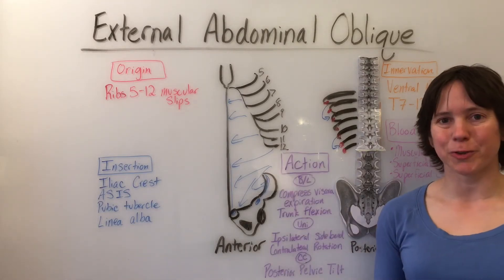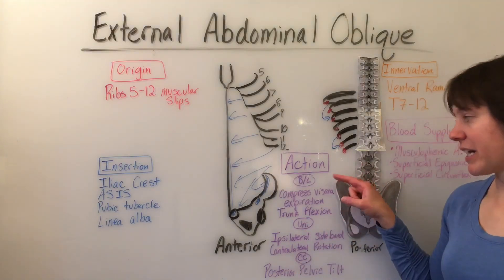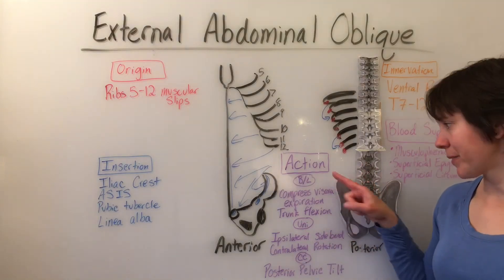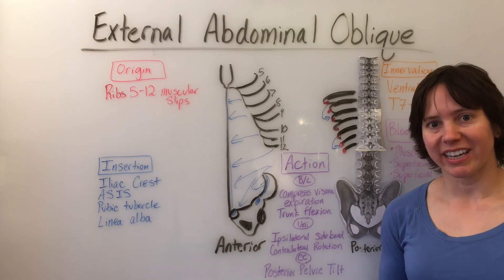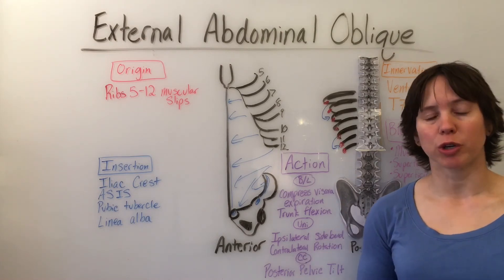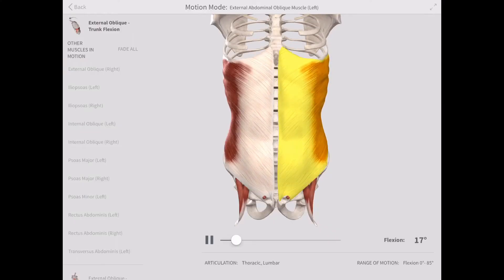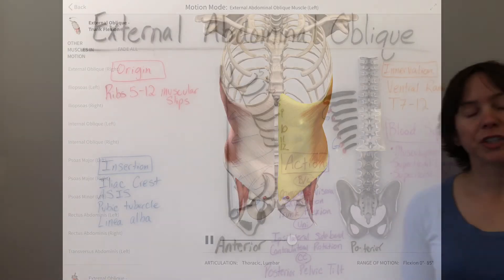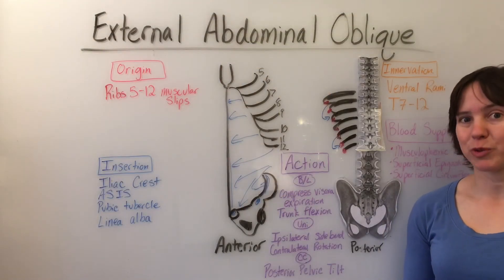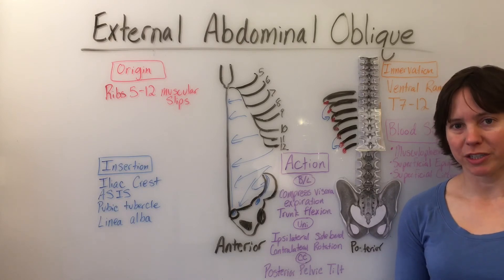The actions for the external abdominal oblique bilaterally are to compress the abdominal viscera, aid in expiration, and trunk flexion. Unilaterally, this muscle will do ipsilateral side bending and contralateral rotation.